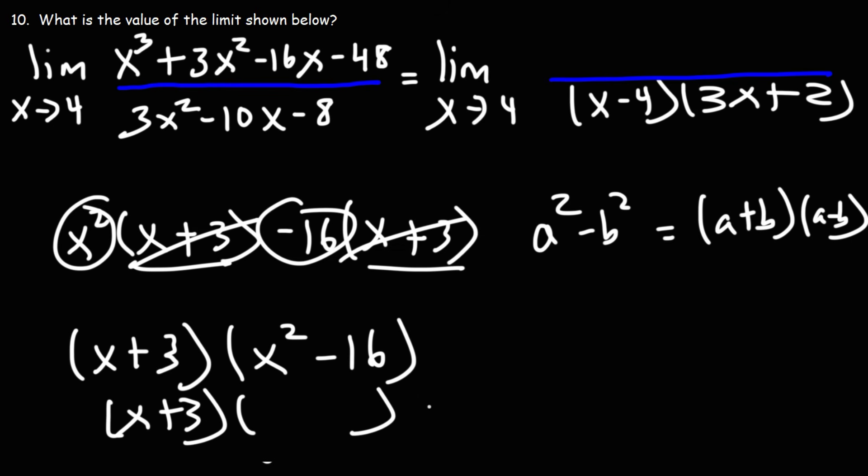The square root of x squared is x, the square root of 16 is 4. One will be plus, the other will be minus. So this polynomial can be factored this way. It's going to be x plus 3 times x plus 4 times x minus 4.